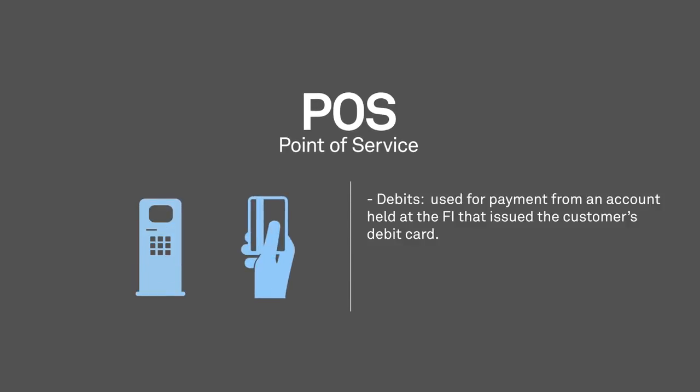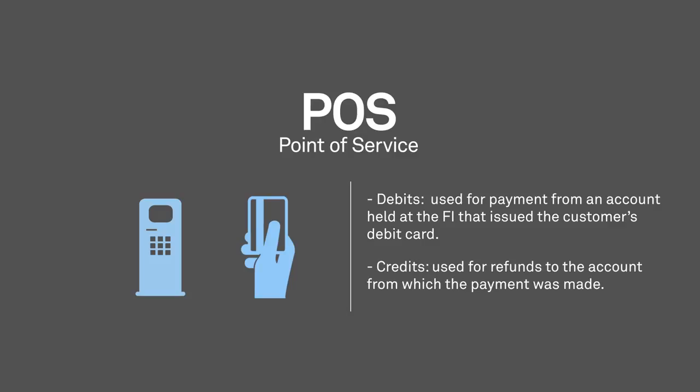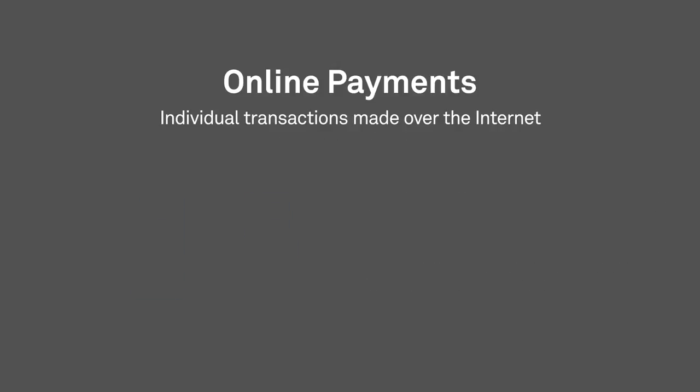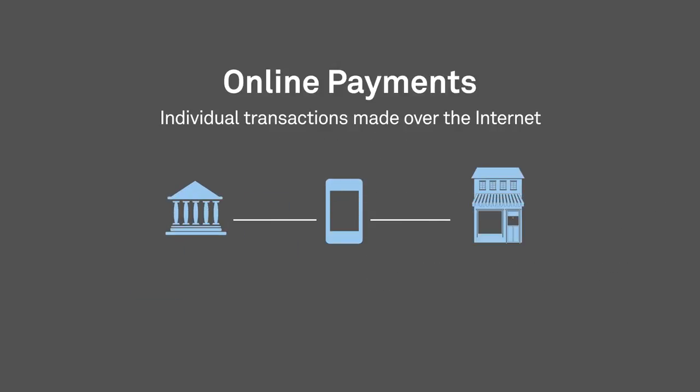POS payments can be either debits, used for payment from an account held at the financial institution or FI that issued the customer's debit card or other debit device, or credits, used for refunds to the account from which the payment was made. Online payments are individual transactions made over the Internet.